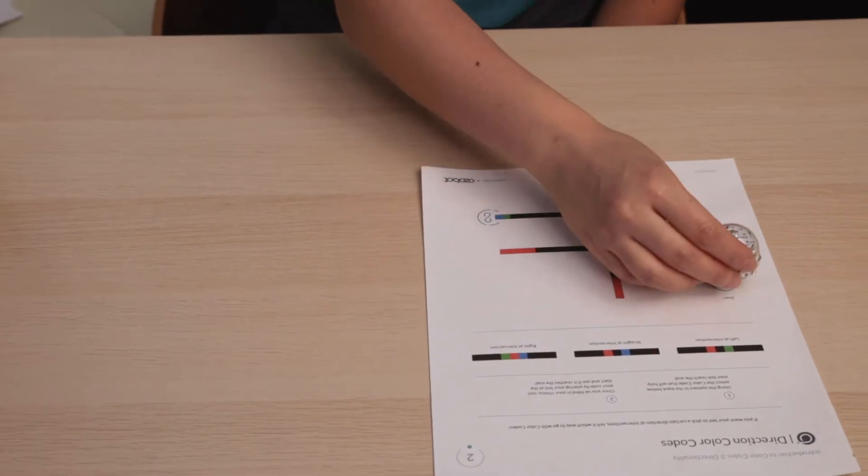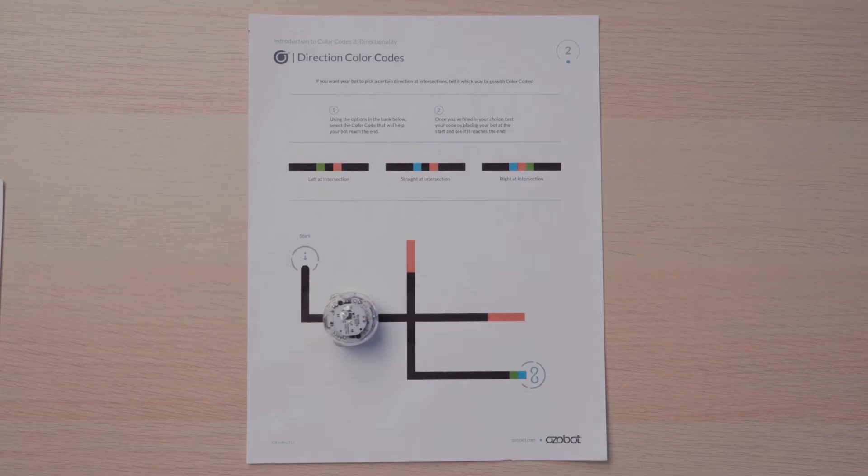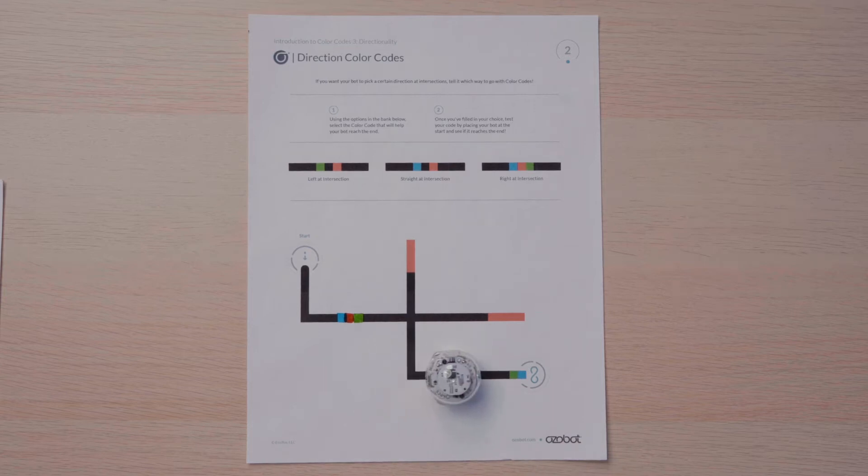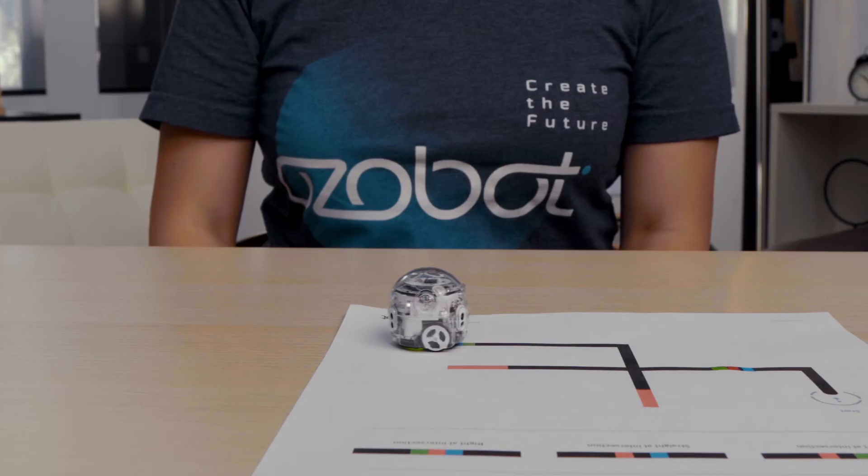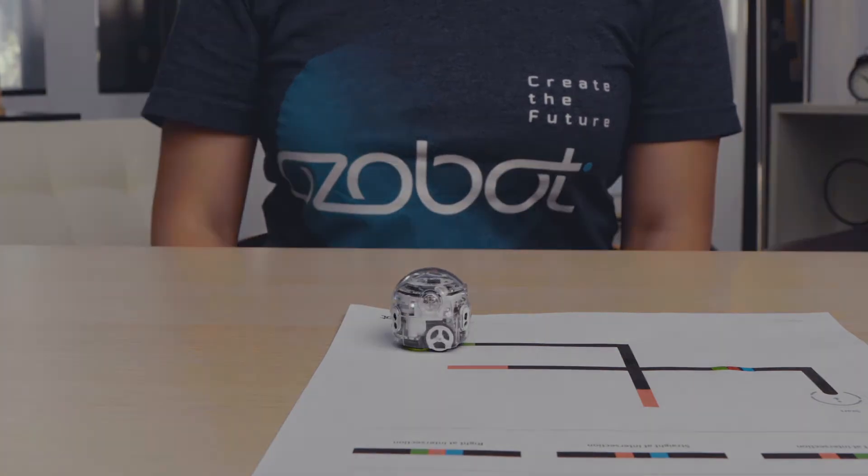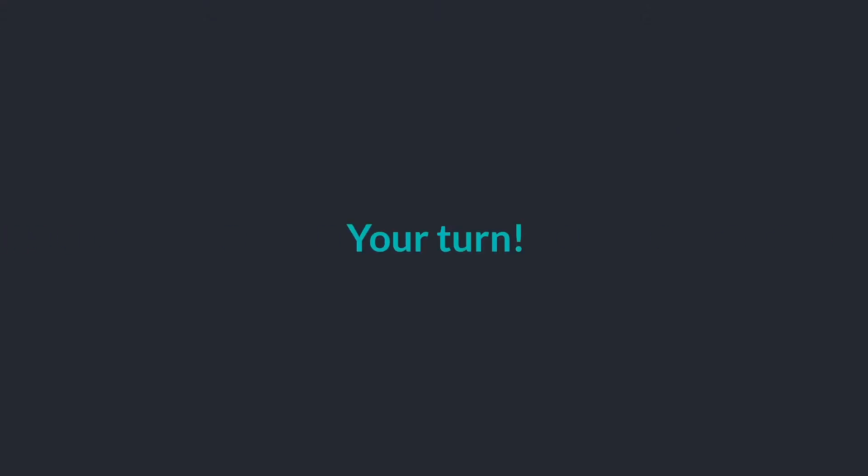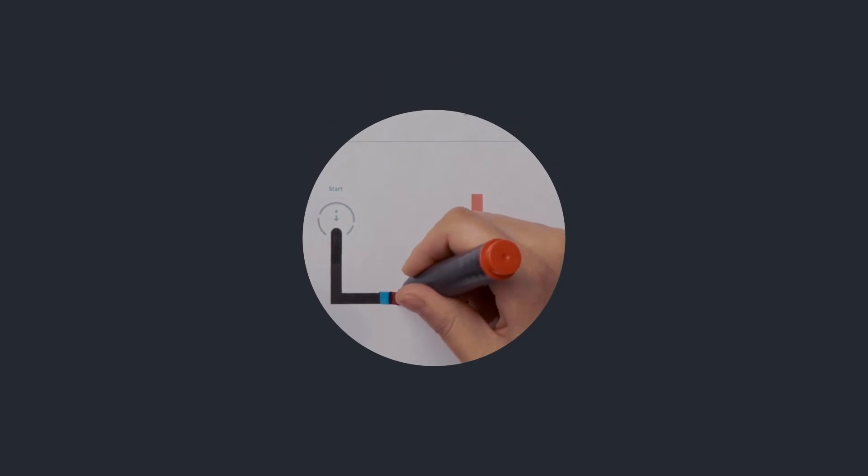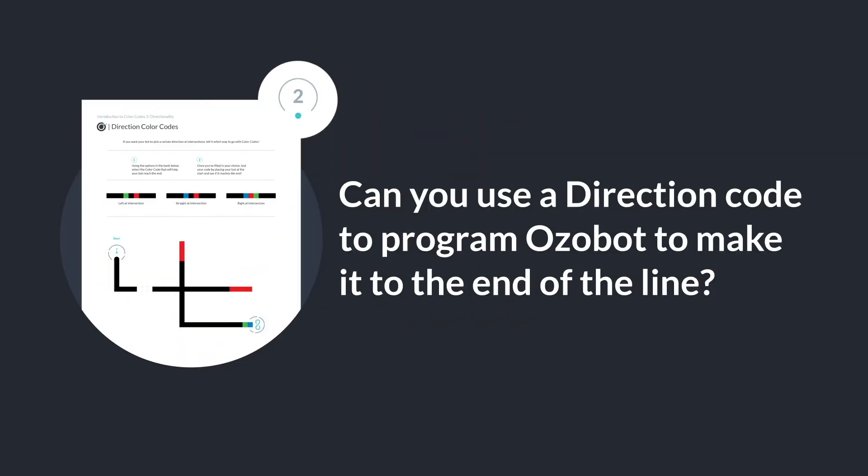To test my code, I'll place my bot on start, have it read the color code, and see if it reaches the end. Nice work. Can you code your bot to make it to the end on page two?